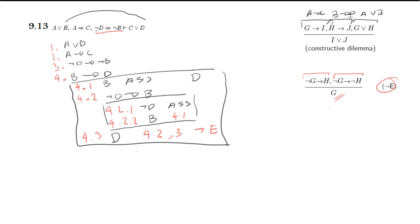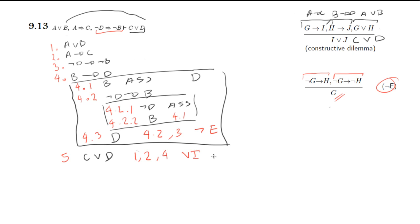And then we can get C or D — and exactly this is what we want. So line number five, I can say C or D using line one, line two, and line four, and or-introduction. Or you can call it constructive dilemma.